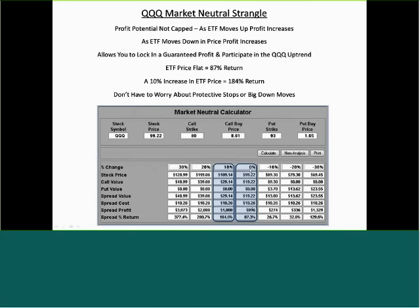If the ETF is up 10%, we'll have a 184% return. So with these market-neutral spreads, you can see the profit potential is not limited by buying that put. A 10% increase gives a 184% return, and a 20% increase in the ETF gives a 280% return. So your profit potential keeps increasing.